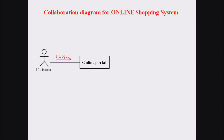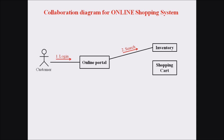Next we deal with a second object named inventory. This inventory is linked with the online portal, and there is a message communication between them. When a customer logs into the system, those login credentials are searched against the inventory or database system. The third object is the online shopping cart, linked to the online web portal. The message between the web portal and the shopping cart is add item — items selected by the customer are added into the online shopping cart.